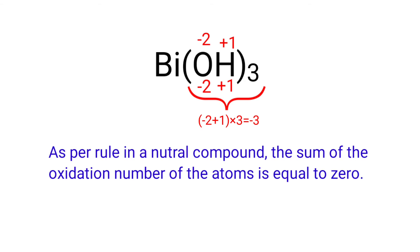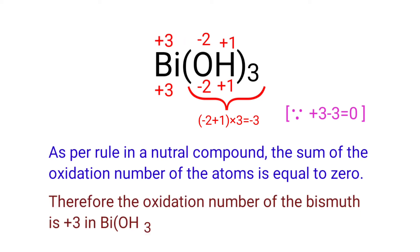As per rule in a neutral compound, the sum of the oxidation number of the atoms is equal to zero. So the numbers along the bottom must add up to zero. So the number under Bi must be plus three. So we can write the oxidation number of the bismuth is plus three. Therefore the oxidation number of the bismuth is plus three in bismuth hydroxide.